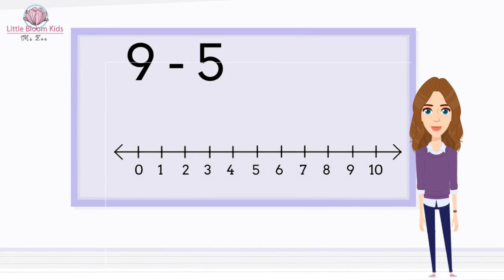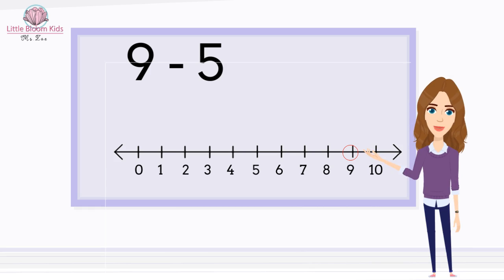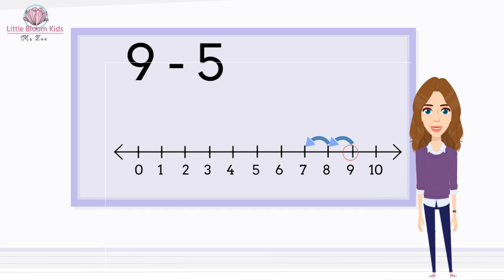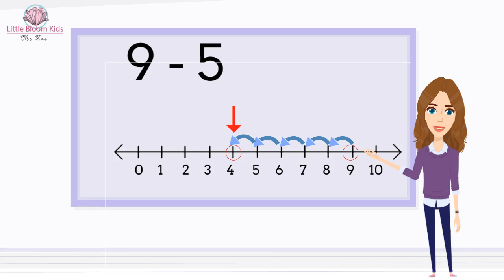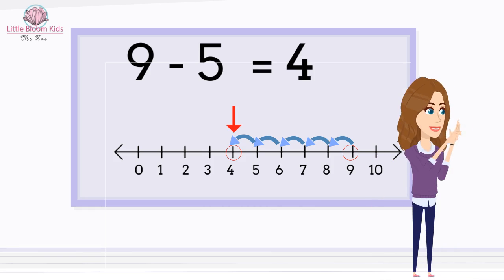Okay, ready for another example? Nine take away five. Yes, we're going to start from number nine, going backwards five times. That's one, two, three, four, five. Yes, we landed at number four. That means our answer is four. So nine take away five equals four. Perfect.